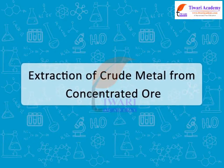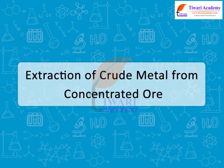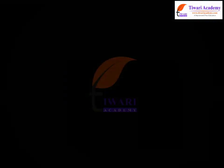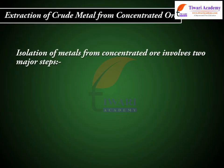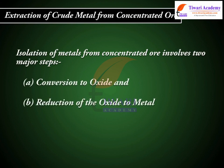Extraction of crude metal from concentrated ore. Isolation of metals from concentrated ore involves two major steps: A) Conversion to oxide and B) Reduction of the oxide to metal.